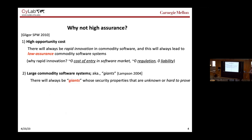The second reason: there will always be large commodity software systems. Butler Lampson says that in software only giants survive. There will always be giants whose security properties are unknown or hard to prove. Between 2003 and 2014, just about every year I asked my colleagues at Microsoft whether there was any single property — their choice — they could guarantee of Windows. The answer was invariably no. At some point in the early days, I don't even think there was any one person who understood the entire Windows system. Very rich ecosystem, very useful in terms of functions, very poor in terms of assurance.